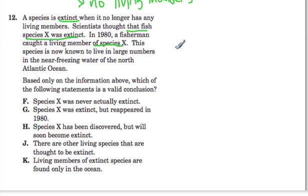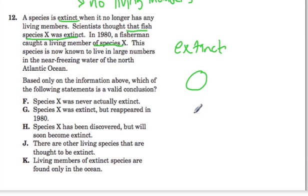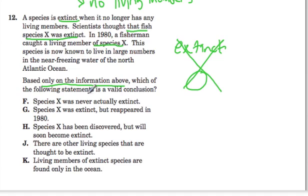Because if an animal becomes extinct, it's gone — there are none of them left. So in 1980, if a fisherman caught a living member of the species, then there had to have been some of them left. Not none of them. And that's what they're asking us here: based only on the information above, only what we're given, which of the following statements is a valid conclusion?